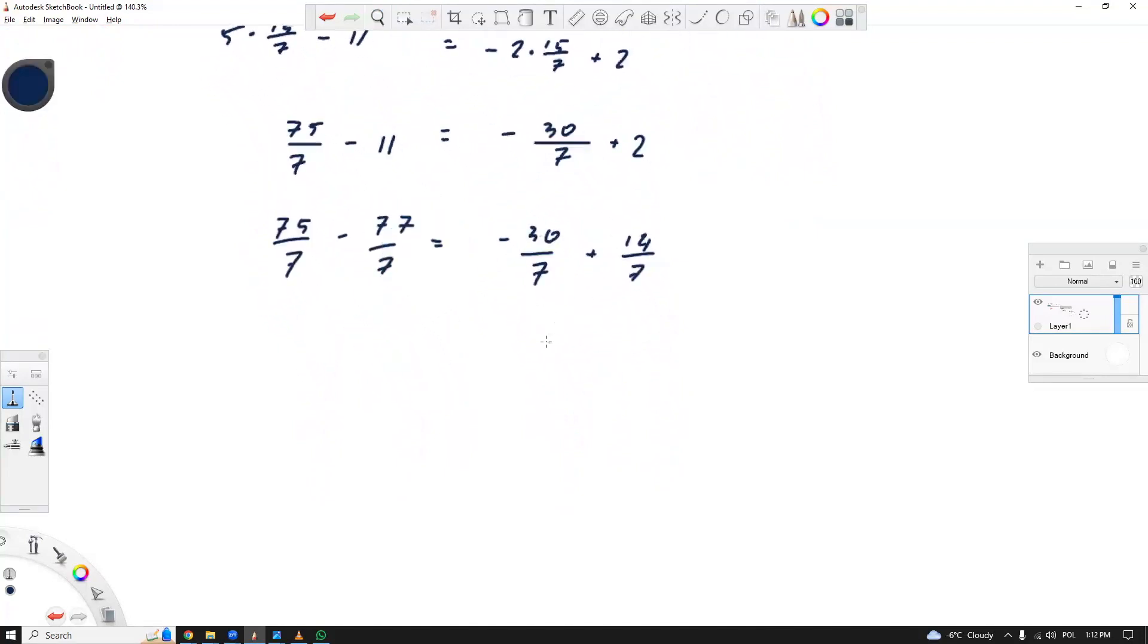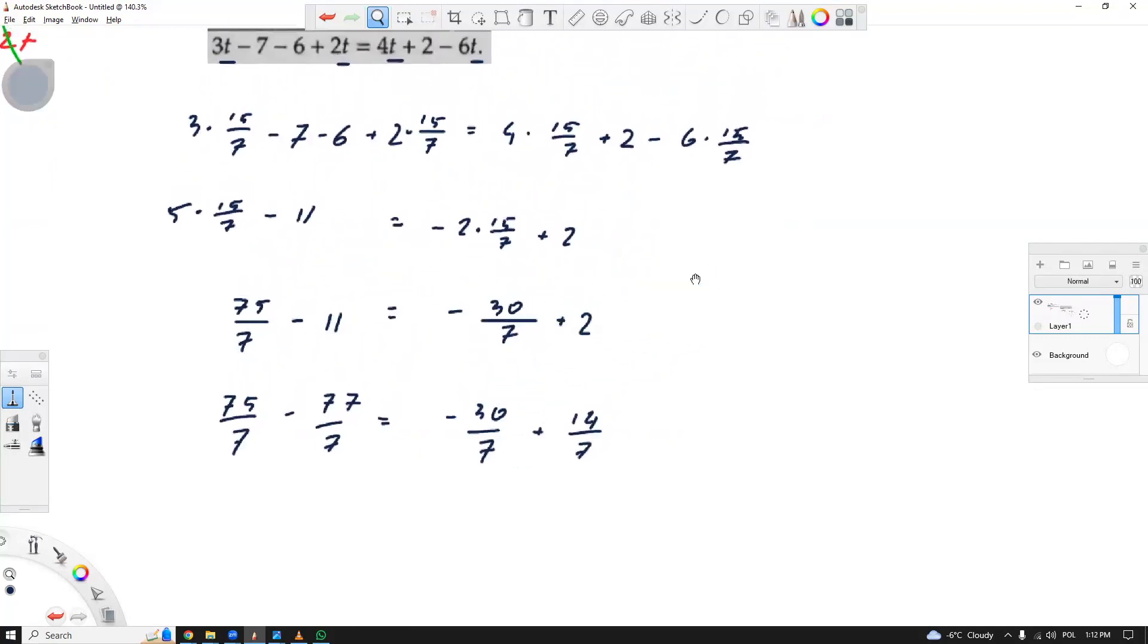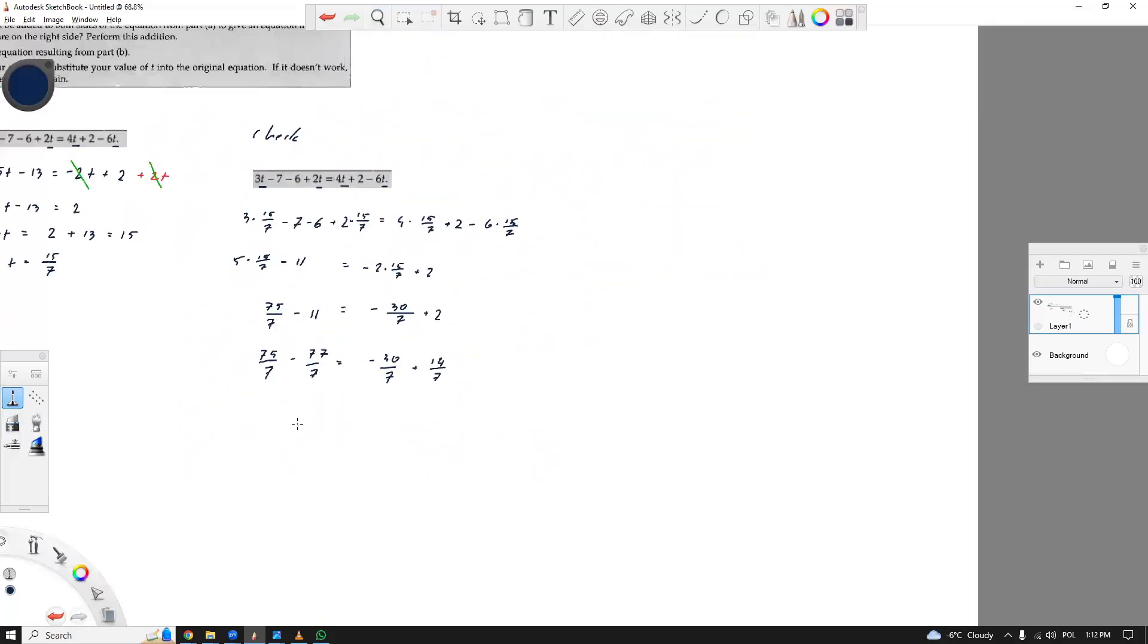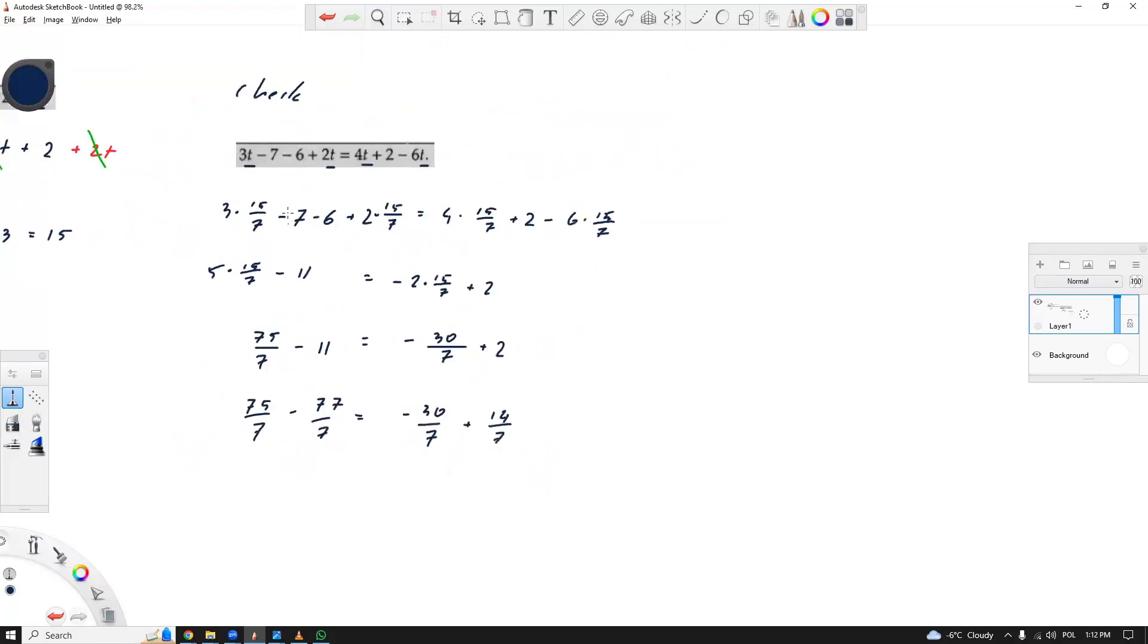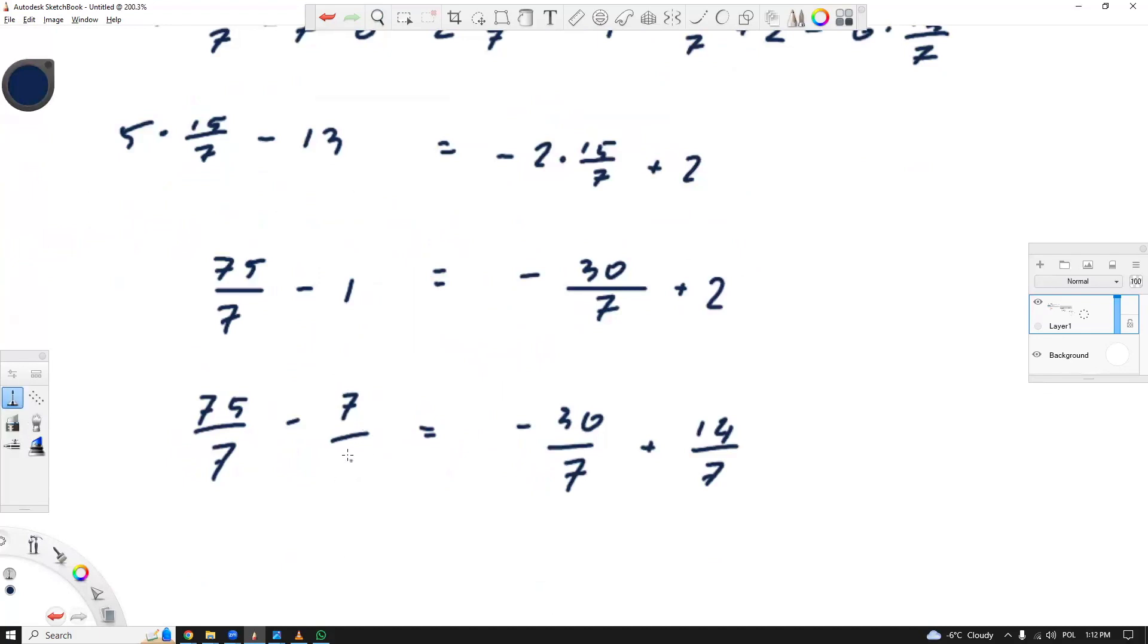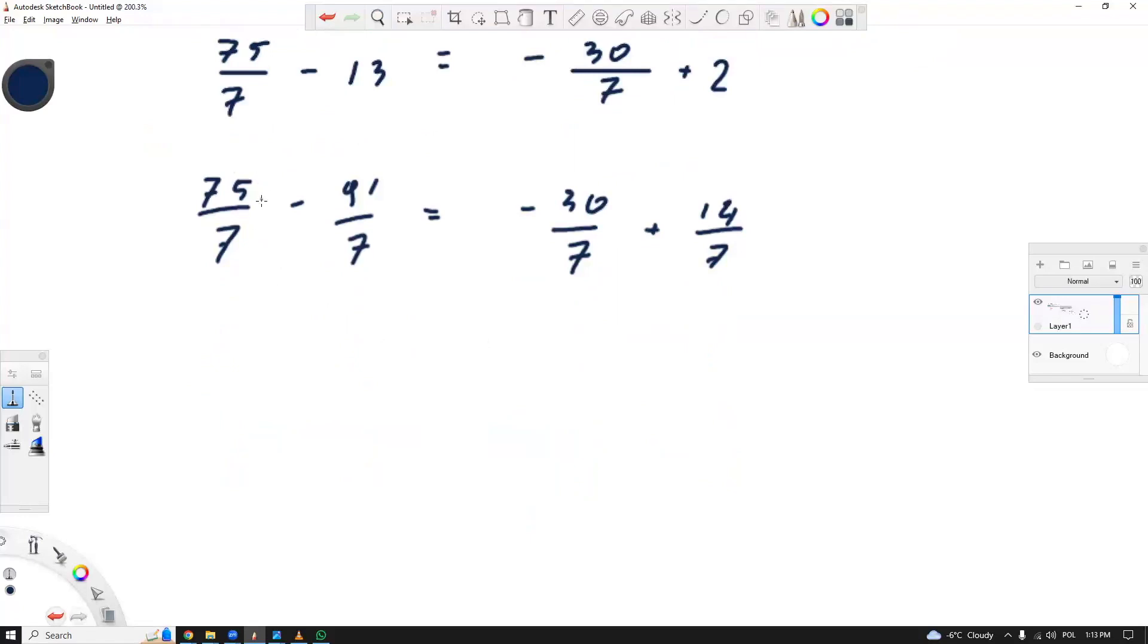I think we're slightly off. Wait, why is that? Let's see, oh, sorry, it's not 11, it's 13. So this one is still over 7, so it's 13 times 7, 91. So we have to be careful with your typos. And here what we are getting, we are getting negative 16 over 7. And here the same negative 16 over 7.